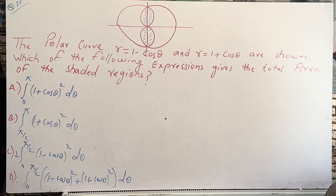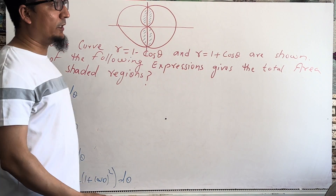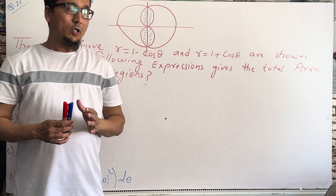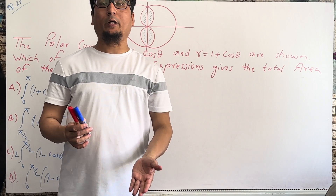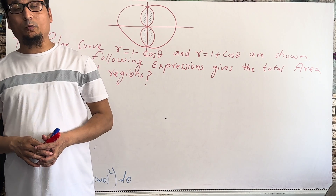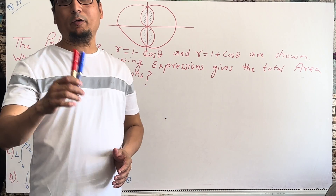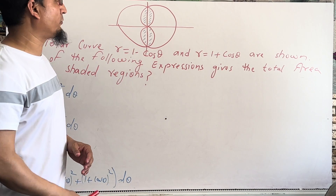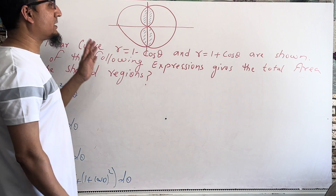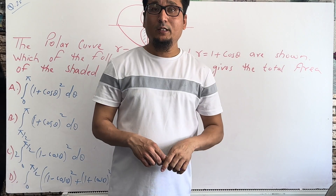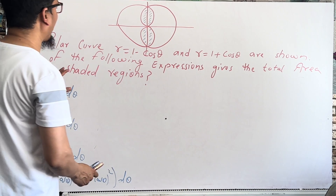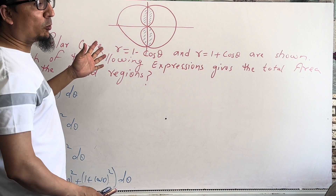Bismillahir Rahmanir Raheem — in the name of Allah, the most beneficial and the most merciful. As I already told you, I am solving the AP Calculus 2018 past paper. We already solved questions 1 to 24. This is question number 25, Section 1 MCQ. This question is very important — it is a polar equation question.